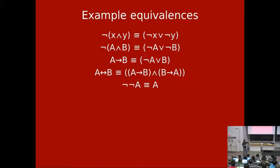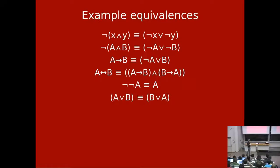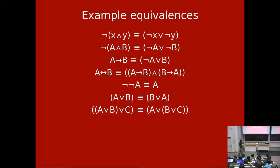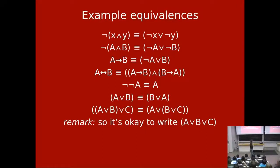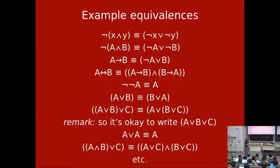Since or is commutative and associative, it's okay to write A or B or C without being finicky about parentheses — these equivalences show it's all the same truth concept. I henceforth grant you the right to omit parentheses with big long ors (and the same for ands). A or A is the same as A, and there are lots more like these.